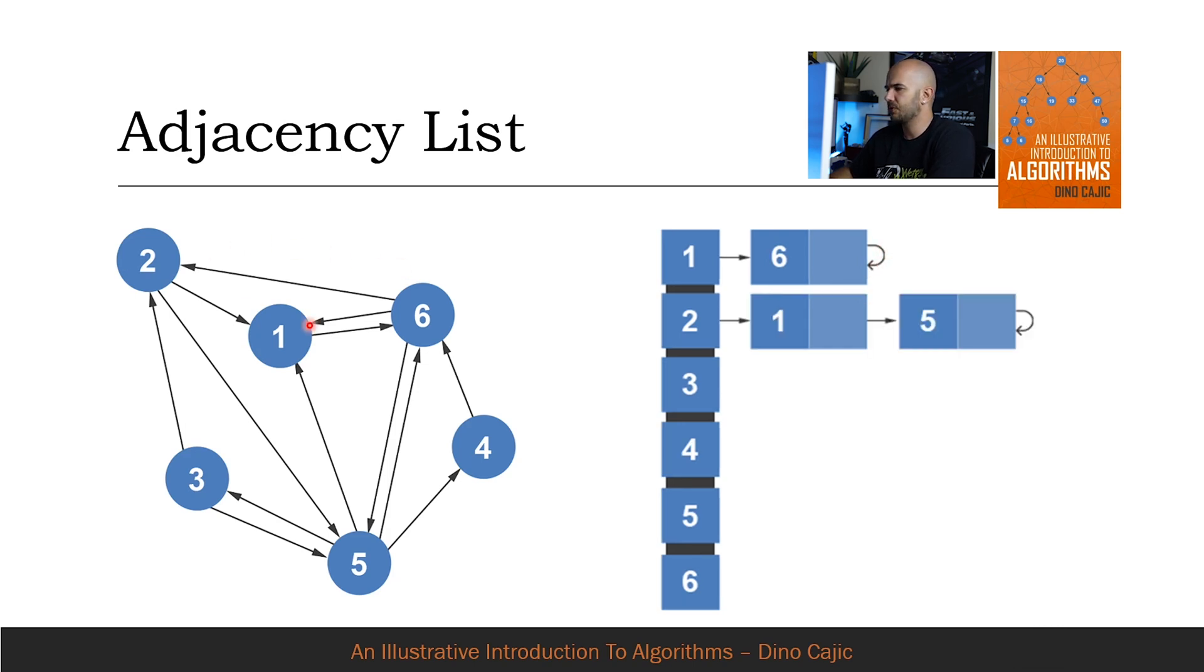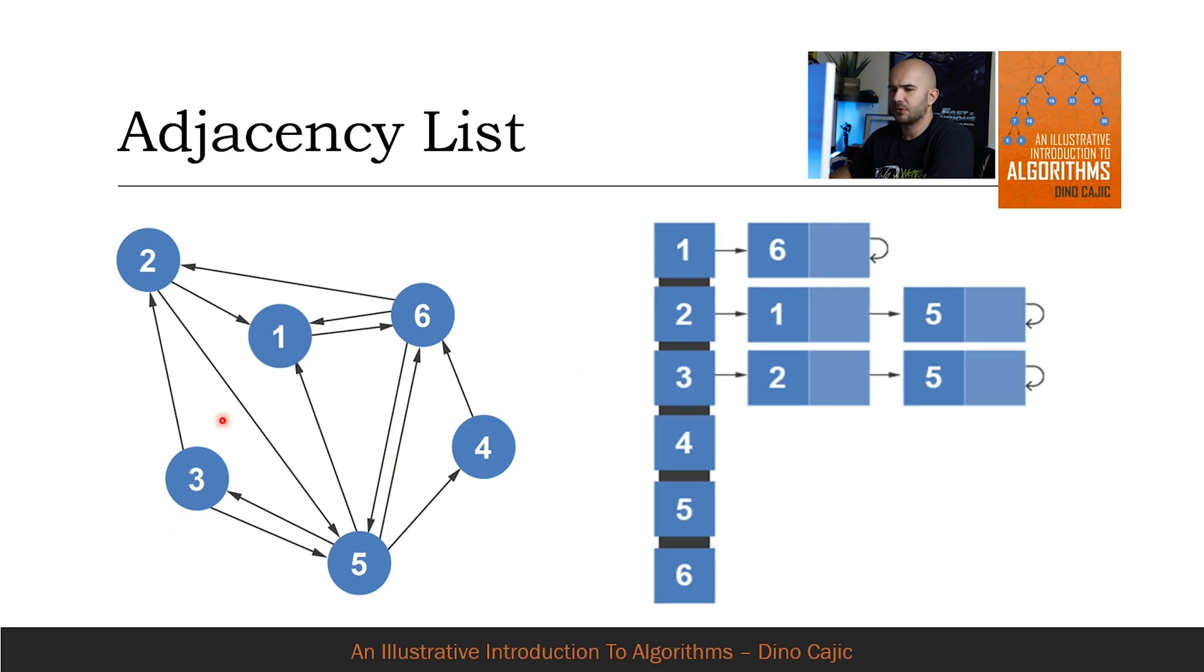Vertex 2 points to two other vertices, vertex 1 and vertex 5. We update the list to have vertex 2 point to 1 and then to 5. Vertex 3 points to 2 and 5, so we update the list.